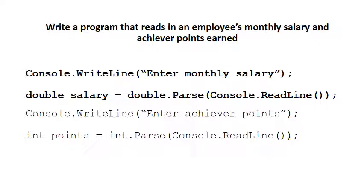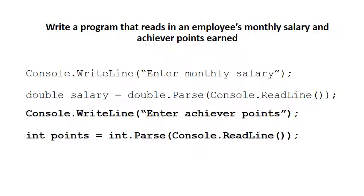The first things that need to happen in the PRAC are the easier, more obvious parts. You read in the monthly salary first. Notice that because it's a monetary amount we use double, and you say double salary is assigned to double dot parse. Then the next step is asking the user for the achiever points and reading them in as integers — notice the int dot parse.